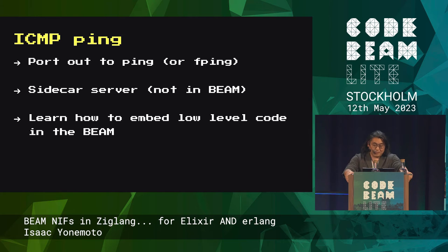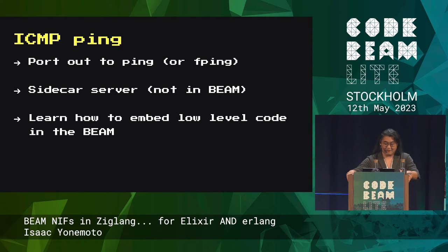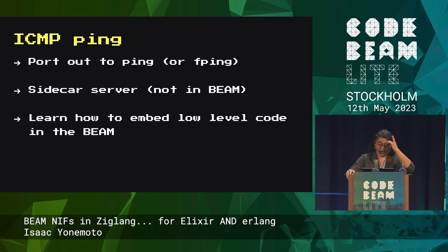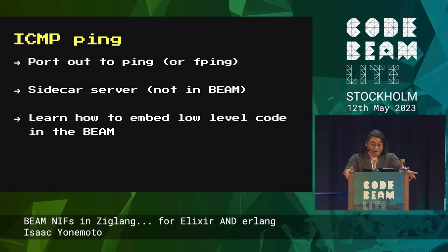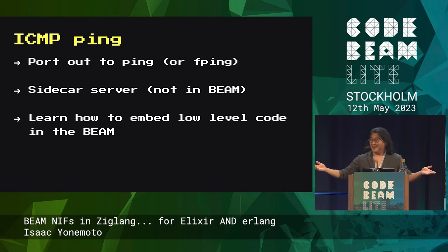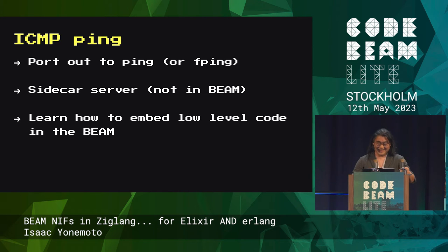So here are your options. You can port out the ping or fping — not the best for the reason I described. You can maybe make a sidecar server that's not in the Beam — who wants to do that? Or you could learn how to embed low-level code in the Beam, which is obviously the best choice. So that's what I decided to do.